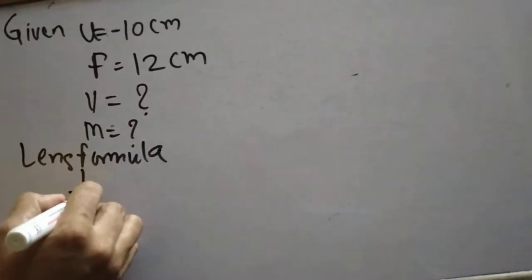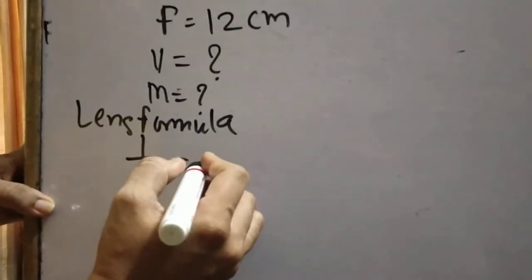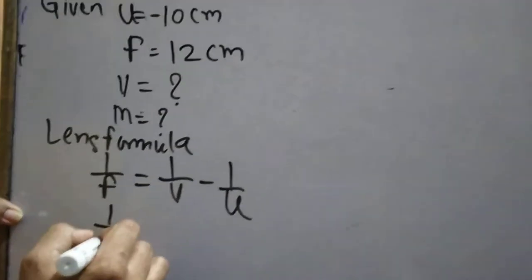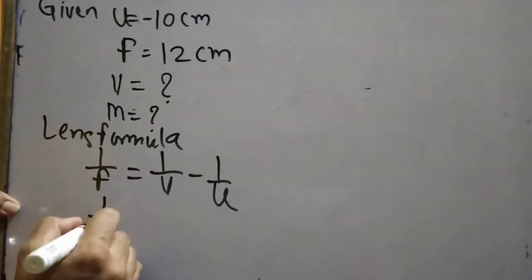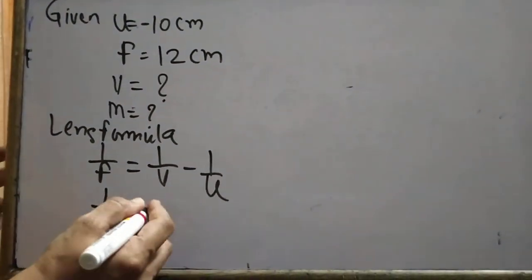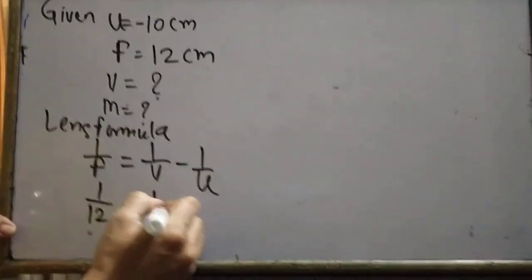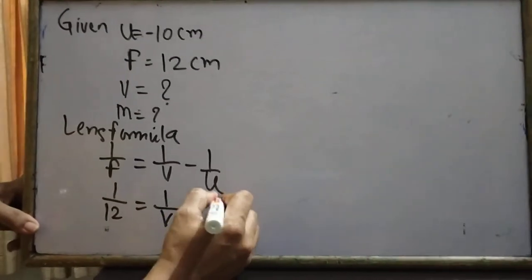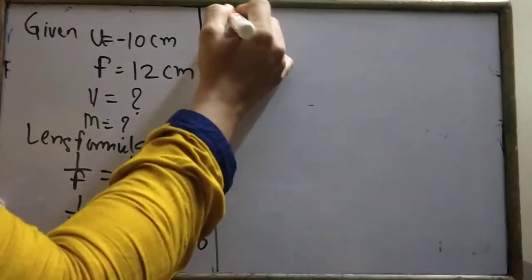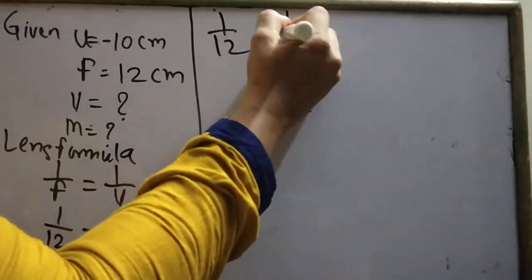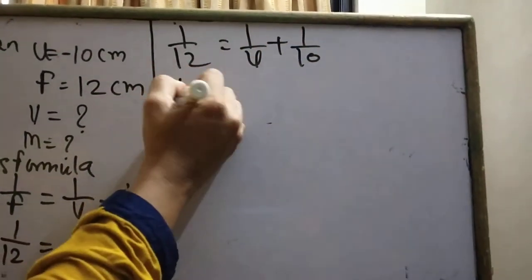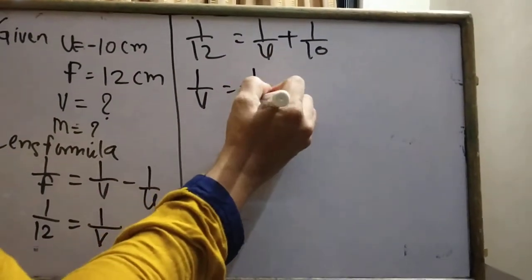Using lens formula: 1/f = 1/v − 1/u. Here f = 12, u = −10. So 1/12 = 1/v − 1/(−10) = 1/v + 1/10. Therefore 1/v = 1/12 − 1/10.